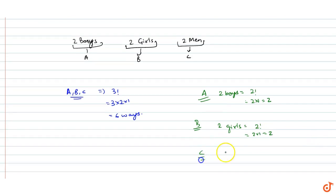And C, we have two men. That is 2 factorial ways. So 2 × 1, which equals 2.